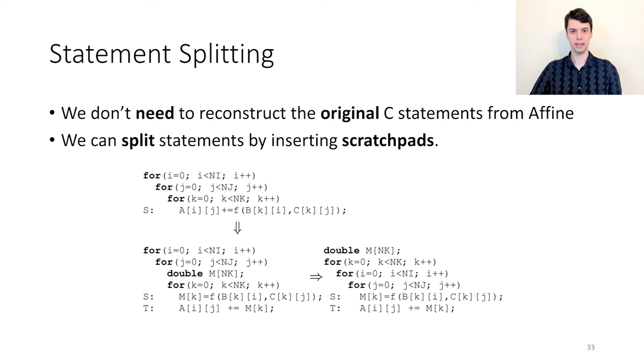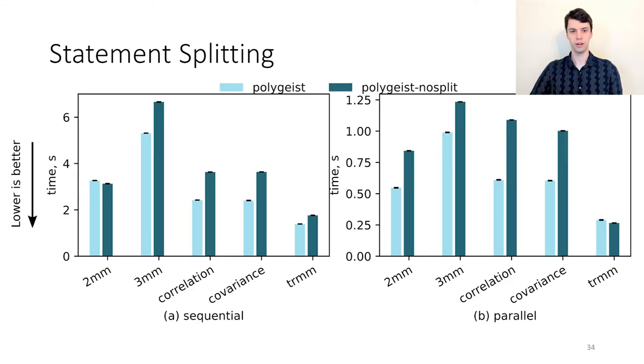This statement splitting results in finer-grained statements which can result in different schedules being explored. Without the splitting, Pluto will never propose the schedule on the right because of the reduction-to-dependency along the k-axis of A. The schedule on the right, however, is found when the statement is split and results in temporal locality for B and spatial locality for C. We developed a simple heuristic to estimate when statement splitting will be helpful. We found five benchmarks in PolyBench where our statement splitting heuristic was applicable and observed performance improvements by the corresponding splitting. Such splitting can be helpful for both sequential and parallel execution. More details are available in the paper.